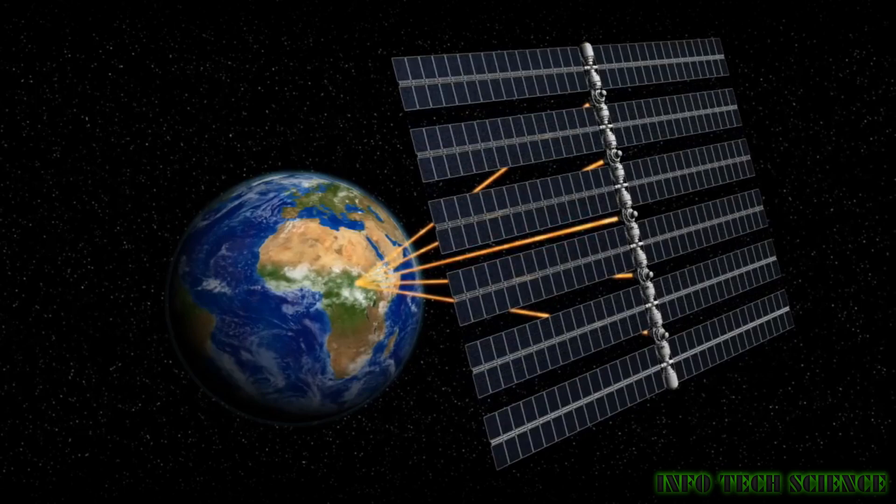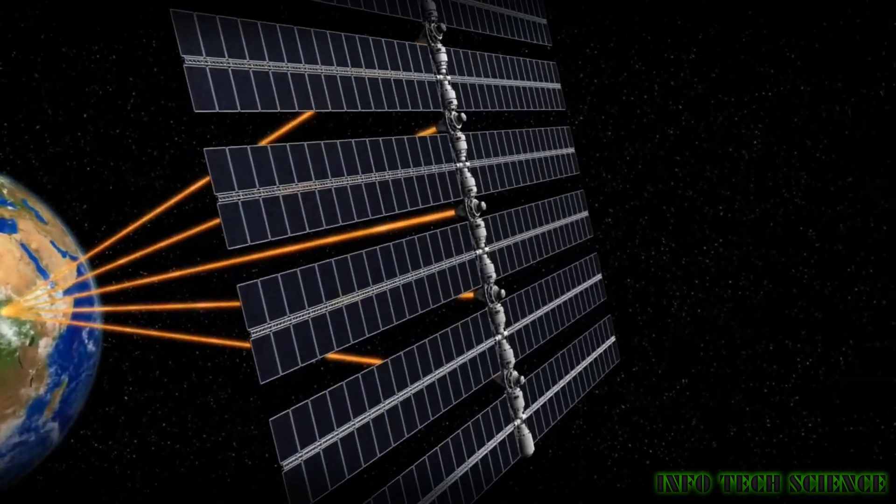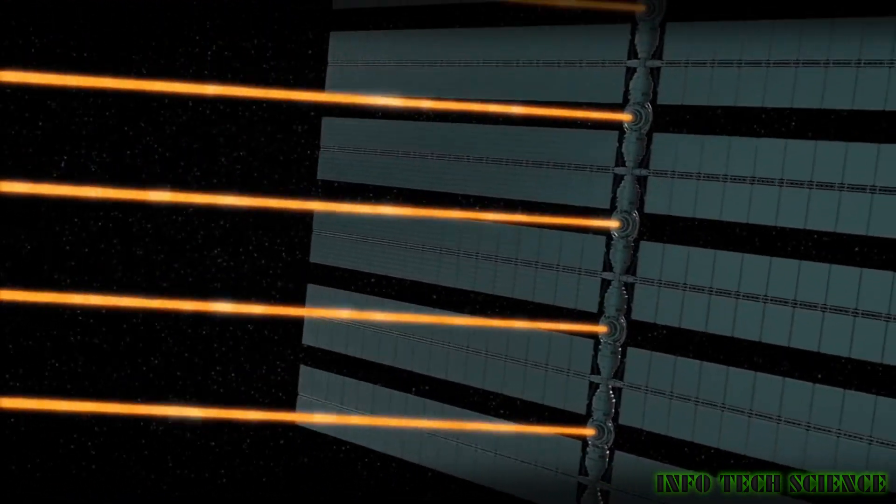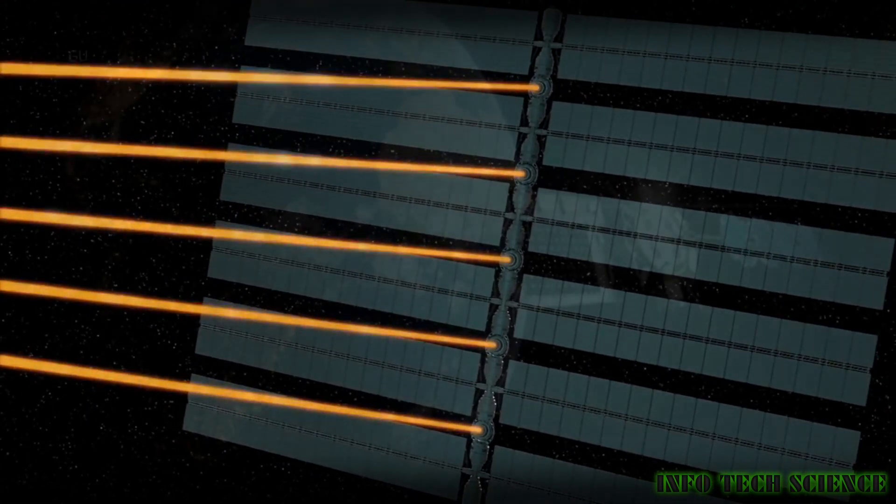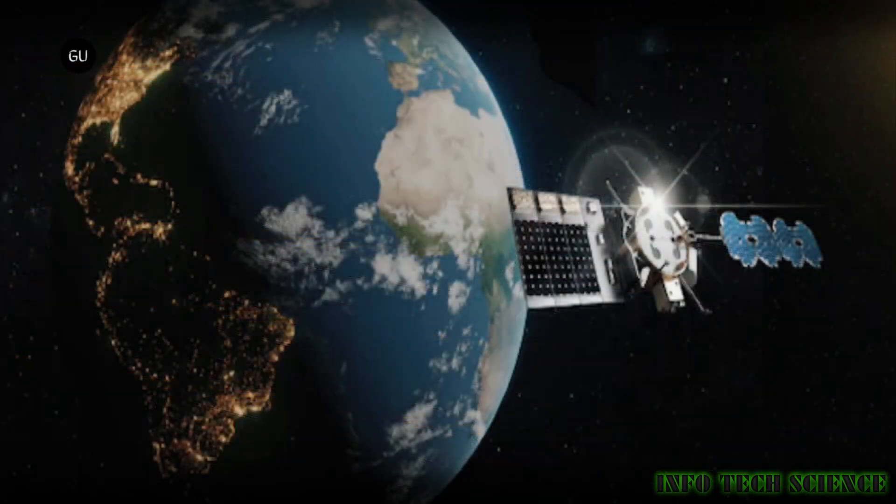Less land requirement: by placing solar panels in space, it reduces the need for vast land areas on Earth, which can be beneficial in densely populated regions or areas with limited available land for solar installations.